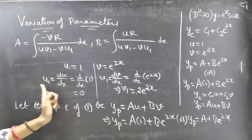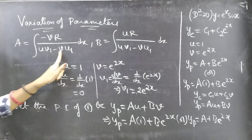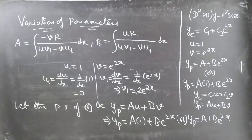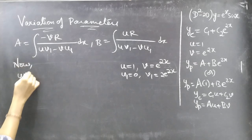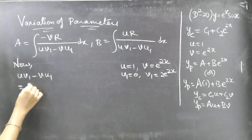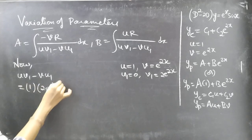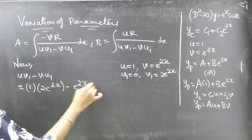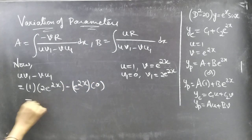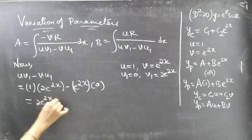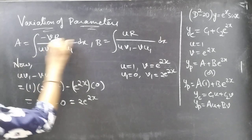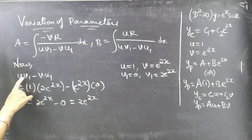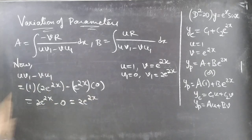Now let's find uv₁ - vu₁. That is 1·(2e^(2x)) - e^(2x)·0 = 2e^(2x) - 0 = 2e^(2x), which is non-zero. Always remember the denominator must be non-zero. We got uv₁ - vu₁ = 2e^(2x).